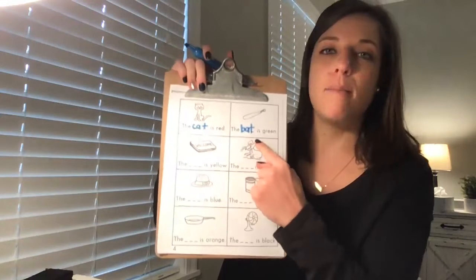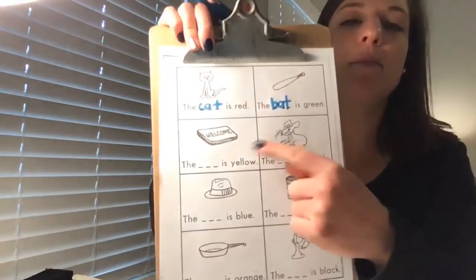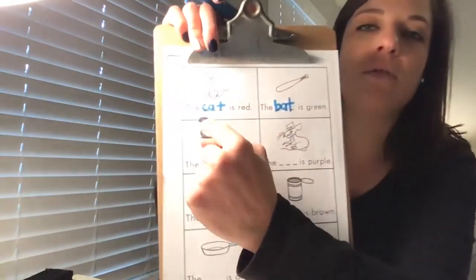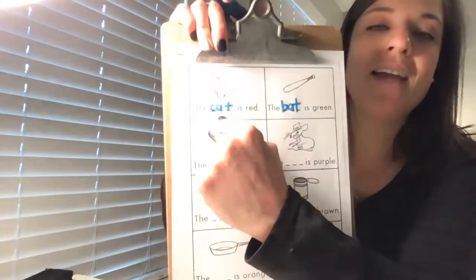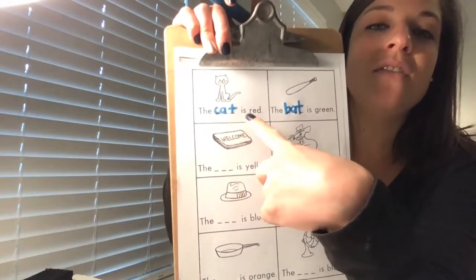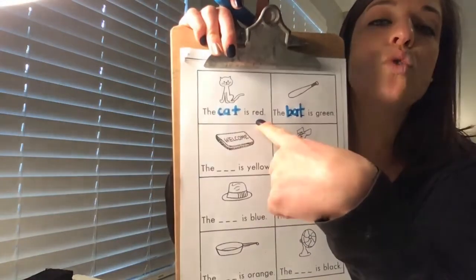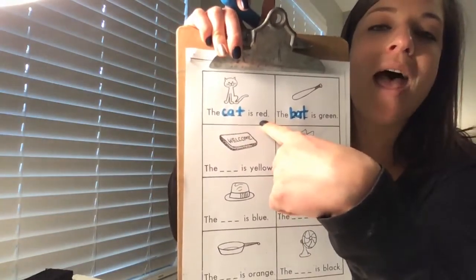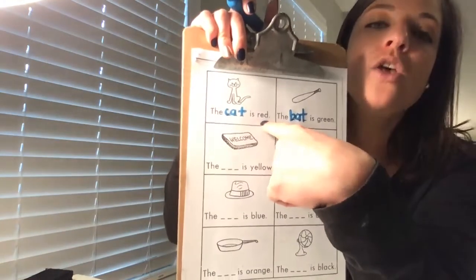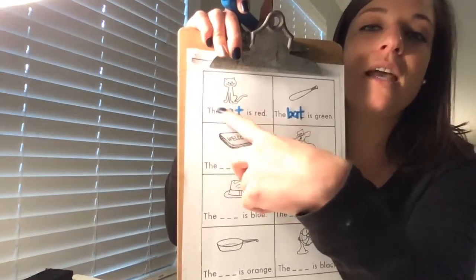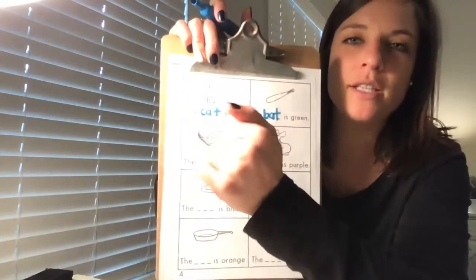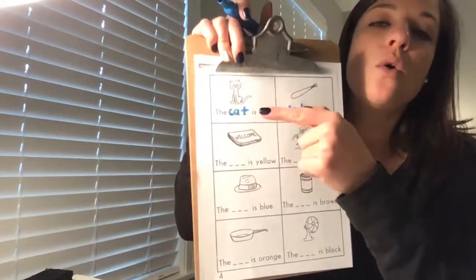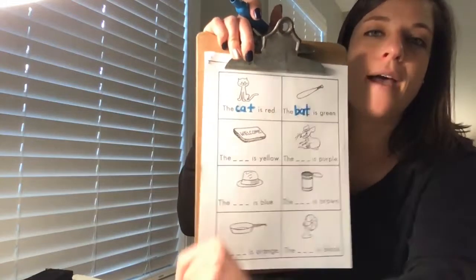Now I see some popcorn words or some sight words that we've already learned. The, oh, we just wrote this word, cat. This is the sight word is, and this is a color word. Red, er, ed, red. So since our sentence says the cat is red, red, I forgot to tell you to grab crayons, but you also will need crayons, you're going to color the cat red, okay?